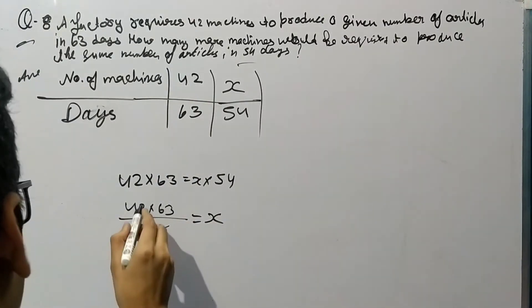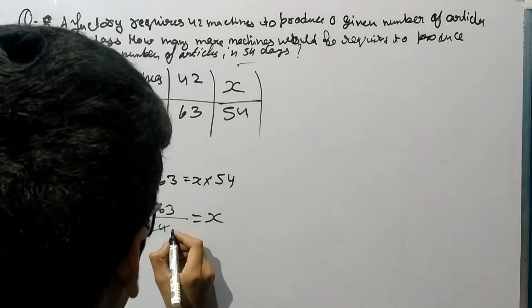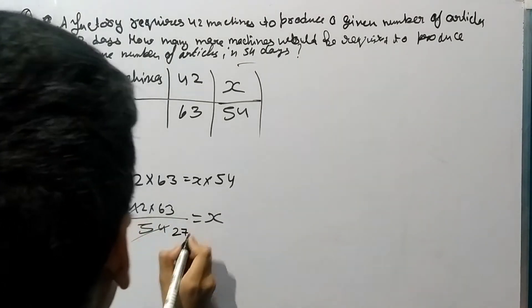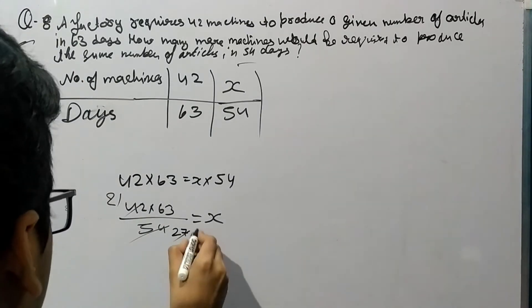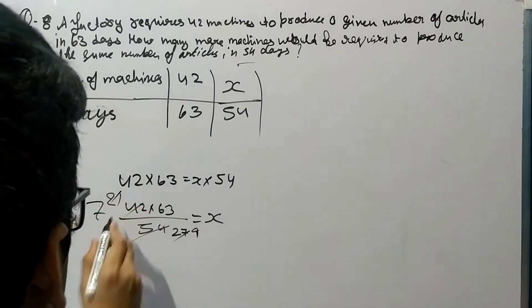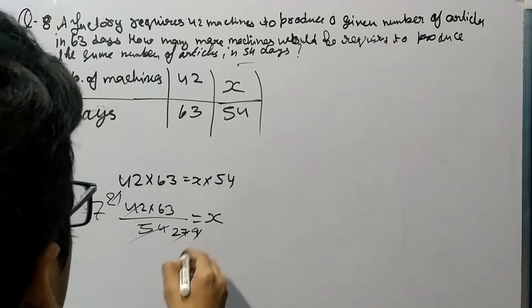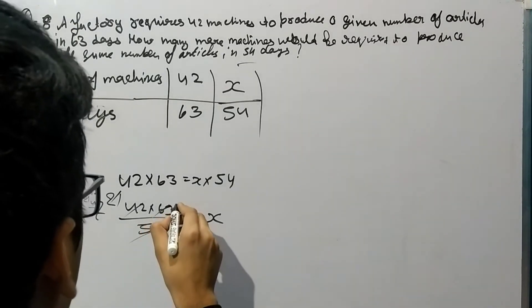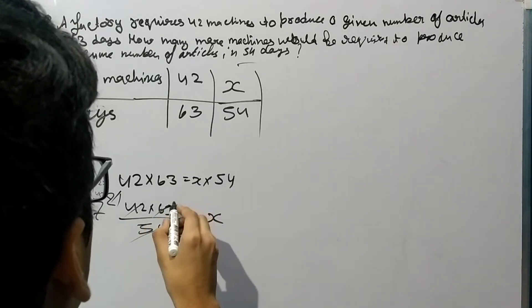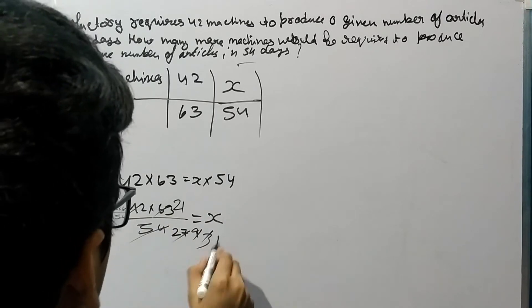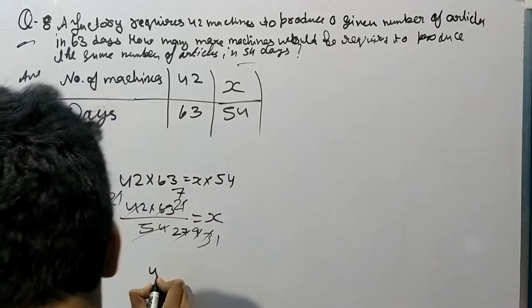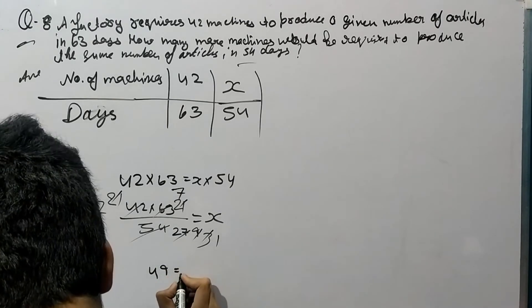So it will be 21, it will be 27, then it will be 9, it will be 7, then 3, and 21, then 1 and 7, 7 times 49, and equals...